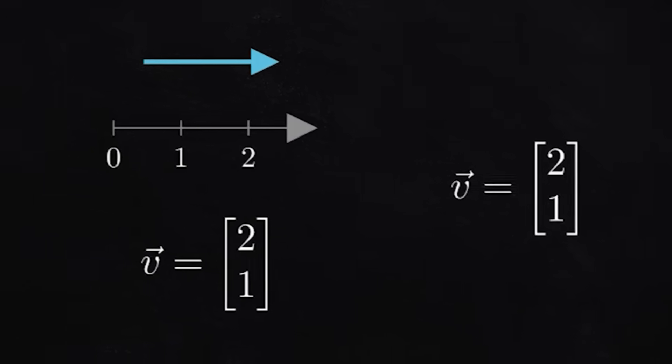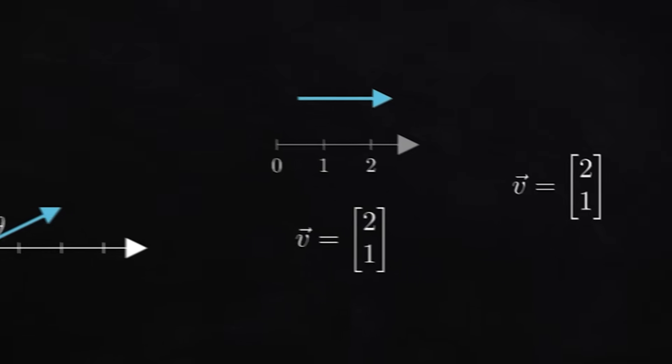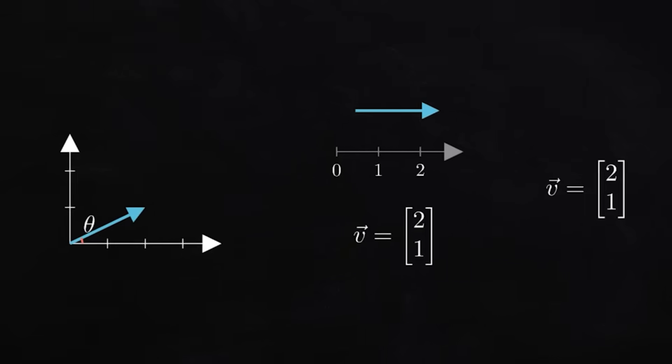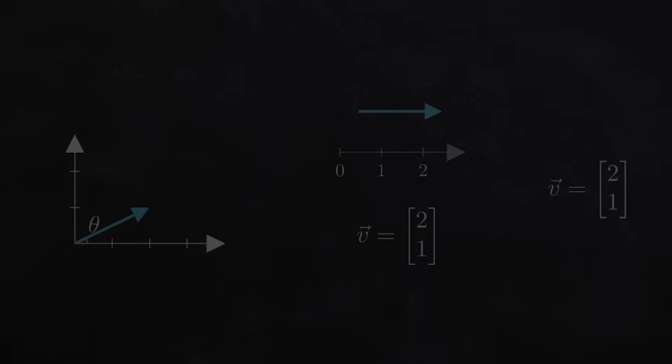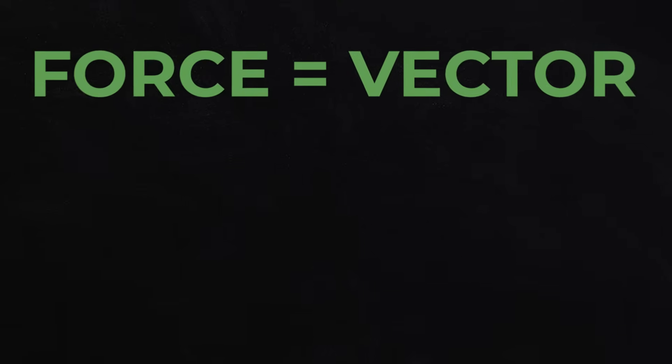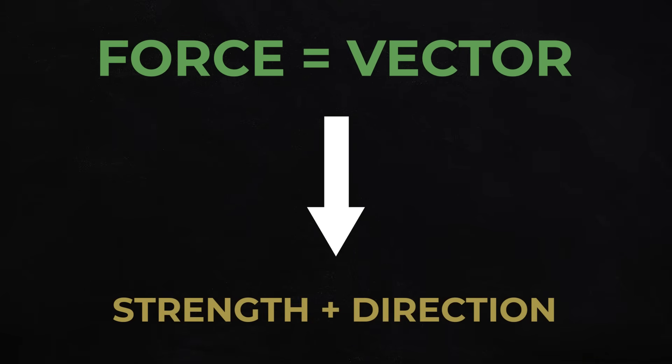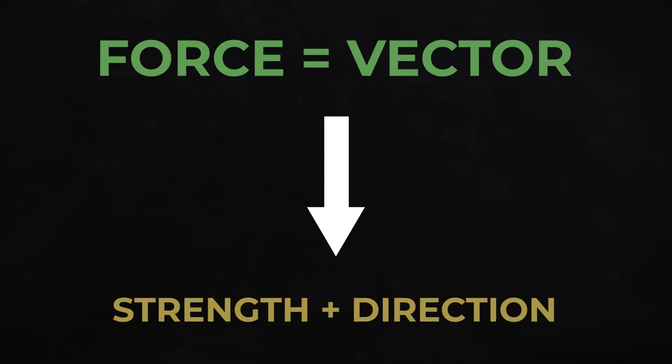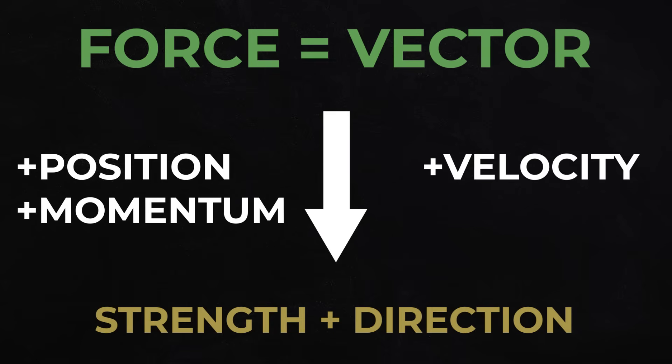Often in physics, especially in classical mechanics, we draw vectors as arrows with a magnitude, its length, and a direction. For example, a force is a vector because it has a strength and a direction in which the force is applied. Similarly, position, momentum, velocity, and many other quantities are also vectors.